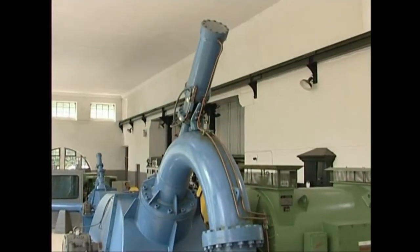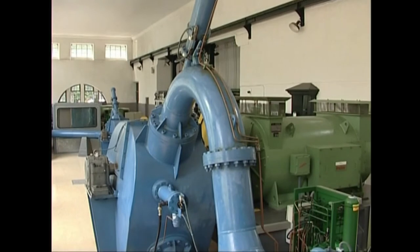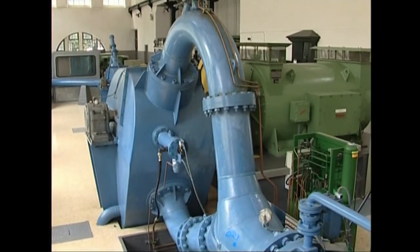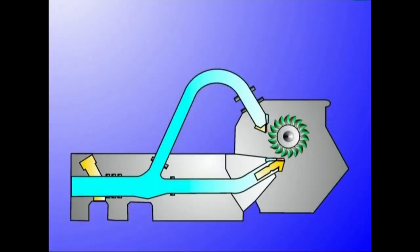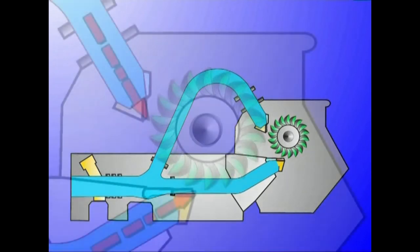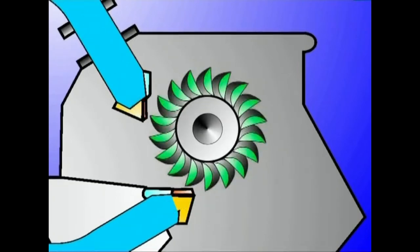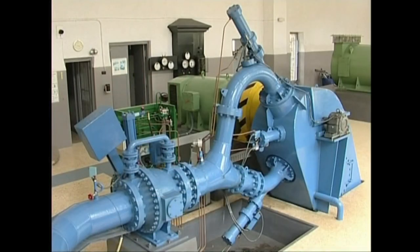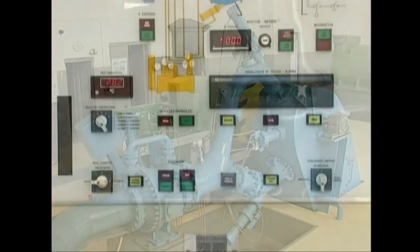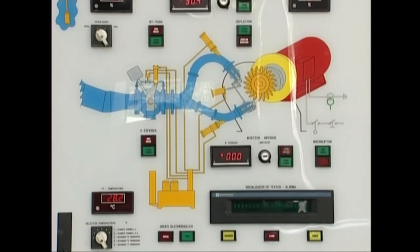Akziozko turbina hidraulikoetan fluidoak ez du gurpilaren pala arteko espazioa betetzen, eta beraz, gurpilaren sarreran eta irteeran presioa berdina izaten da. Akziozko turbina hidraulikoen artean, Pelton izenekoa da erabiliena. Ura injektore izeneko estuguneetatik ateratzen da zorrotada bizian gurpilera. Ura gurpiletik tangentzialki igarotzen da. Gurpilak zaliak ditu albait energia gehiena bihurtzeko diseinatuak. Pelton turbinaren gurpilak airean egiten du lan, eta ura gurpila bultzatu ondoren, gravitatearen eraginez ubidera erortzen da.